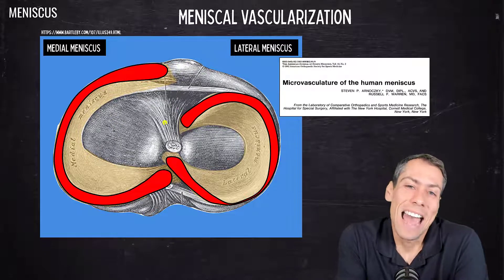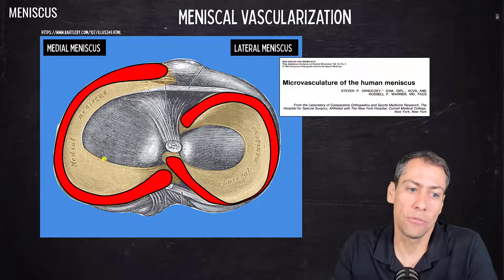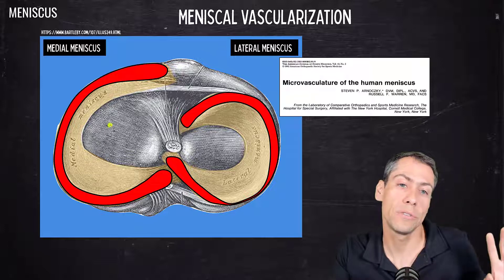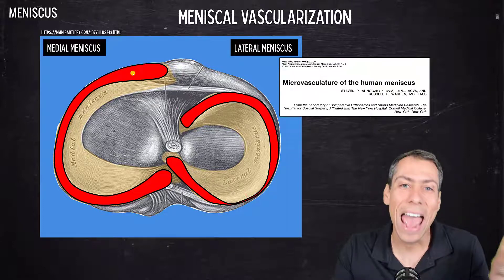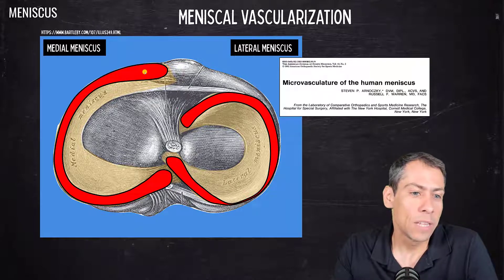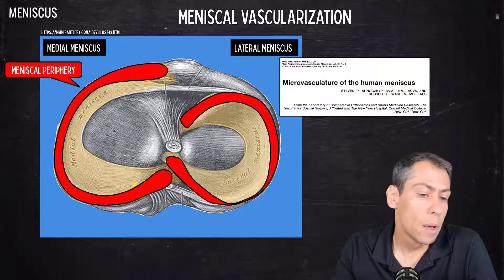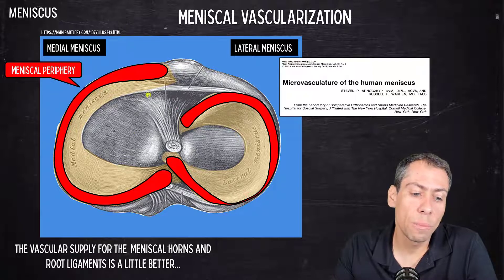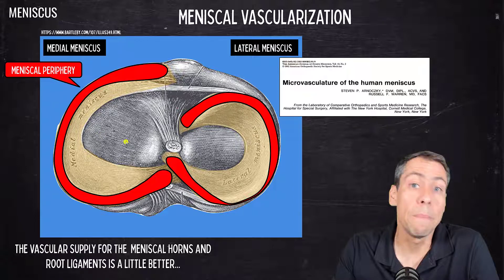Now let's look at the meniscal vascularization in the long axis of the meniscus. We saw in the short axis that vascularization is located at the periphery. In the long axis view, we can again see vascularization at the periphery, and we can also notice that the vascular supply for the meniscal horns and root ligaments is a little better than the vascular supply for the meniscal bodies.